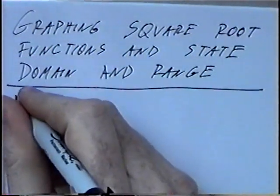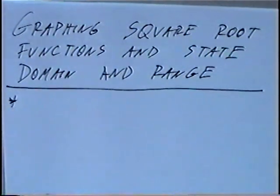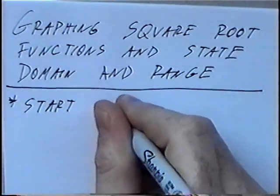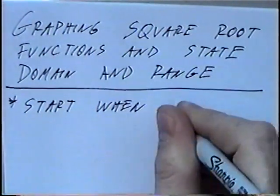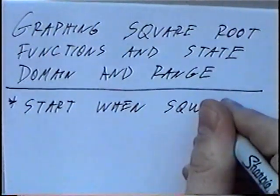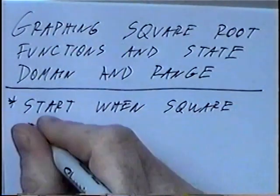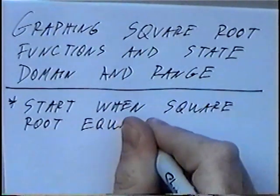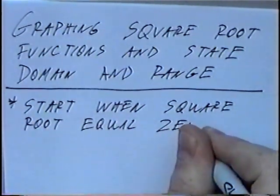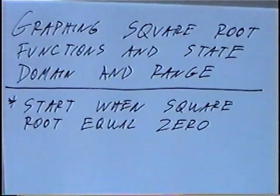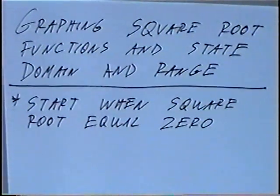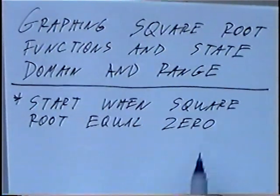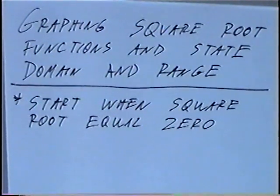One definition we'll use for this section is: start when the square root equals zero. For this section we'll graph using t-tables, and we'll start the t-table when the square root is equal to zero, since the smallest value a square root will be is zero.